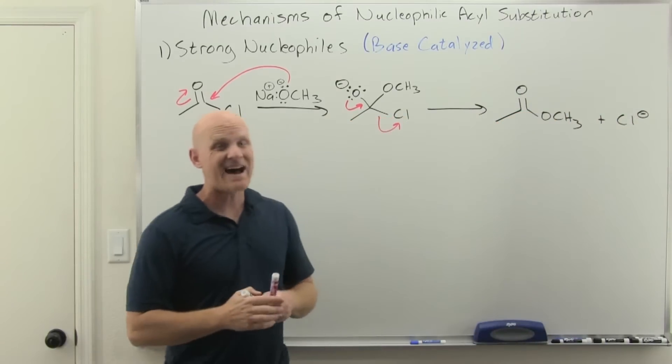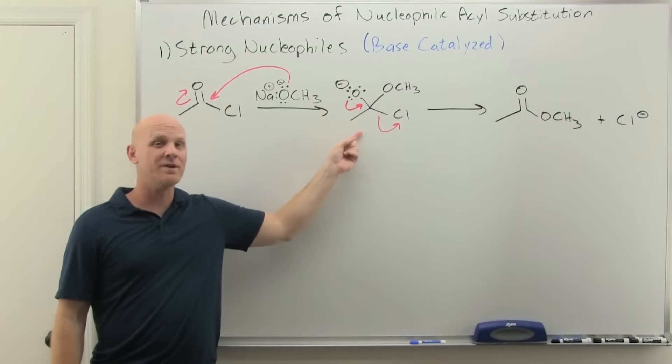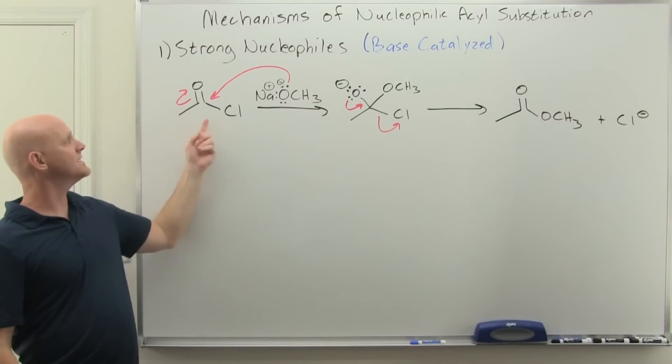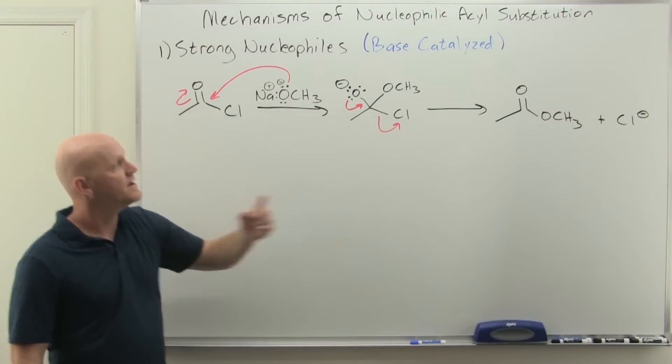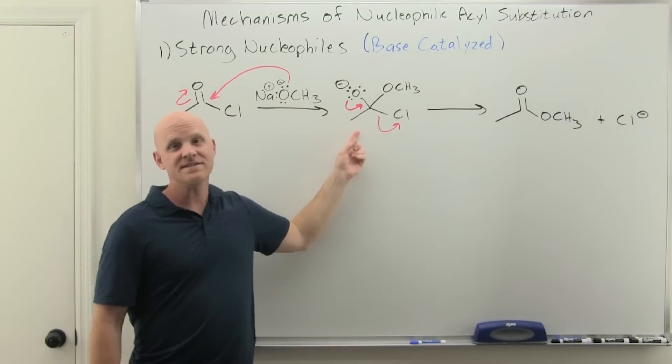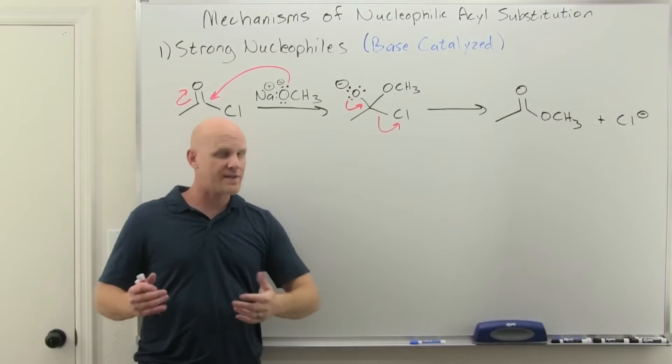Cool, and that is the entire mechanism. Now notice we talked about the intermediate here as being the tetrahedral intermediate. The reason it gets pointed out as being tetrahedral is that your reactant is sp2 hybridized trigonal planar, your product's sp2 hybridized and trigonal planar, but the intermediate is indeed sp3 hybridized carbon right there and tetrahedral. So that's why that gets pointed out that way.